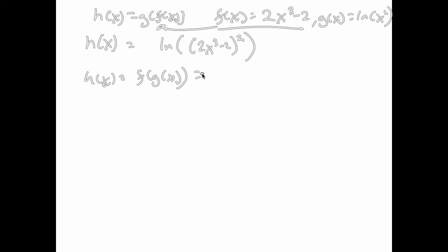It's the reverse. So now we're going to start off with 2x cubed minus 2 on the outside, and for the x here we're going to plug in the natural log of x squared, and that's going to be cubed minus 2. That's not the same thing at all as the previous answer, because function composition in general does not commute, as we discussed.